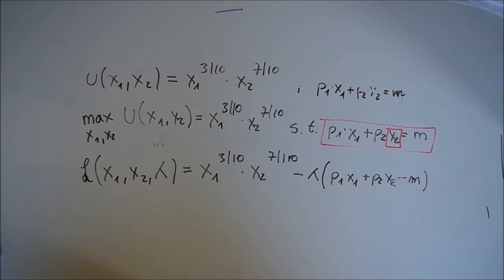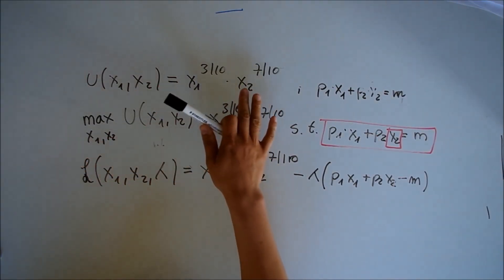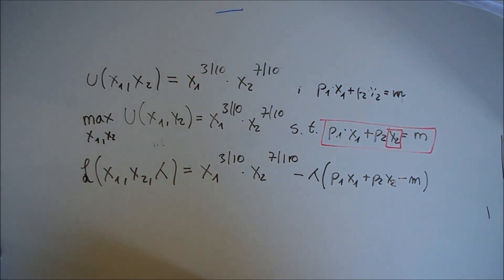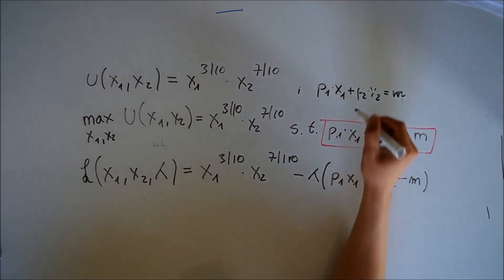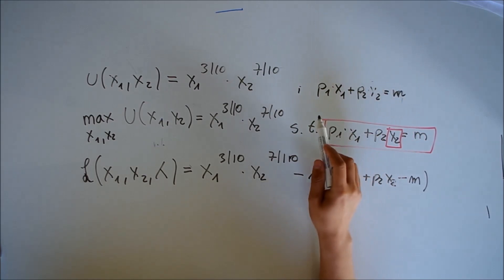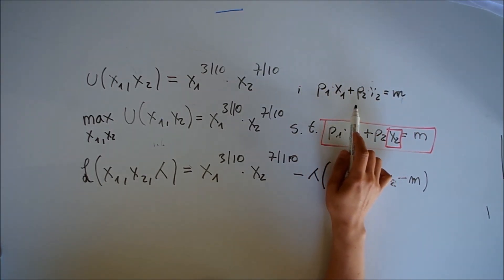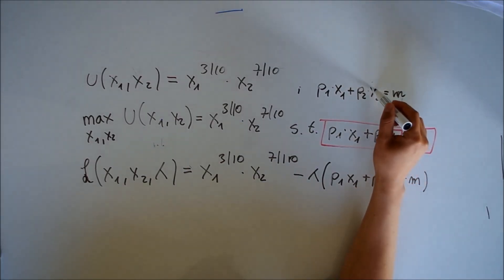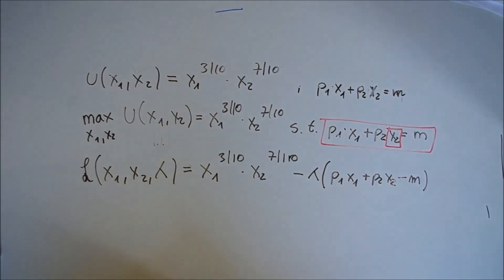From the given text we derive the equations needed to solve the problem. The utility function is already given, and we need to derive the budget constraint: p1*x1 + p2*x2 = M.